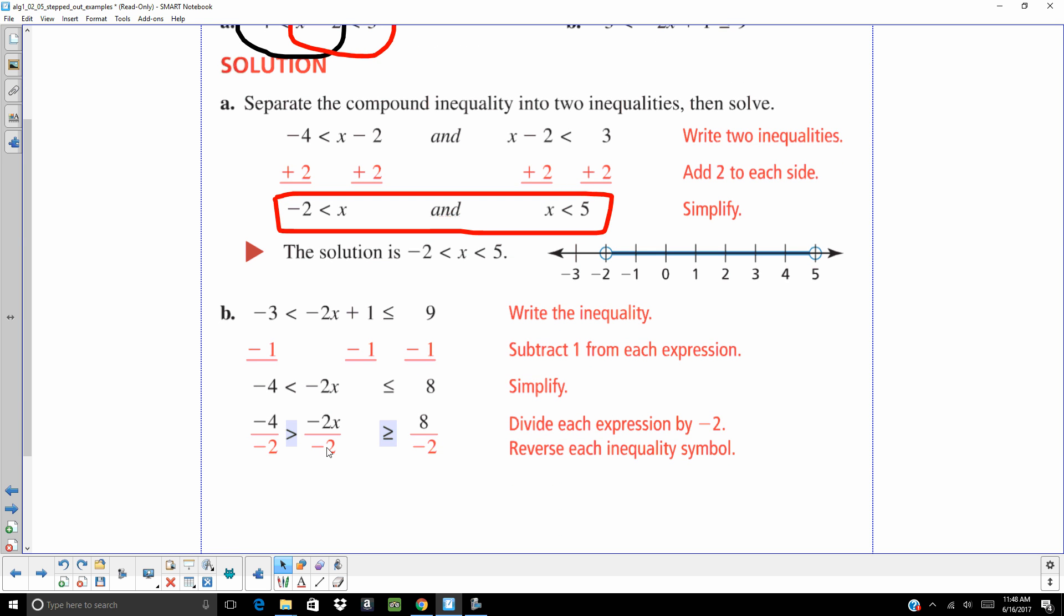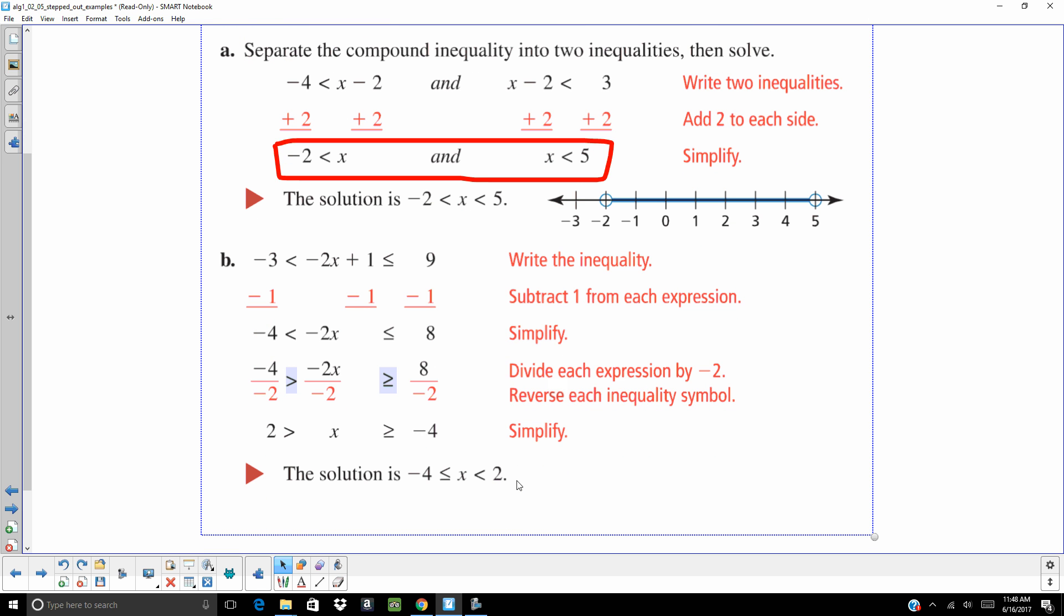And then we're going to divide by negative 2. The trick on this one is since we're dividing everything by negative 2, we're going to have to flip the direction of that inequality. So our solution, negative 4 is less than or equal to x is less than 2. They rewrote that because typically you want your smallest number over to the left. And on this one, you're going to be shading in between negative 4 and 2.